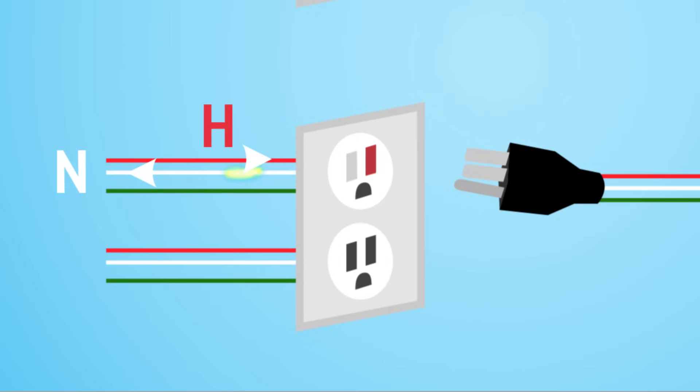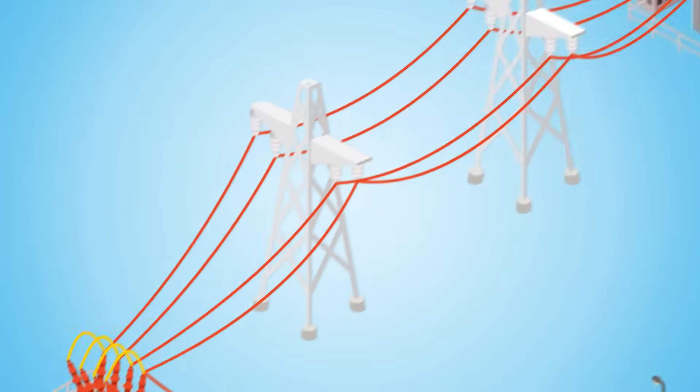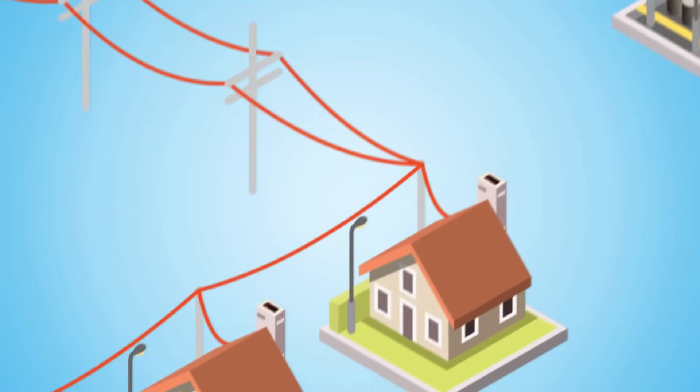This wire completes the circuit and feeds the electricity back into the system. But implement this idea into a larger power distribution system, and you've created a huge problem.